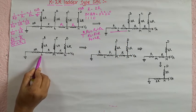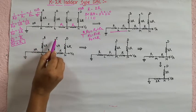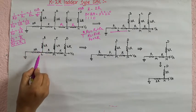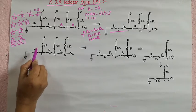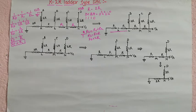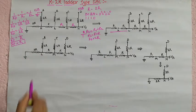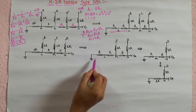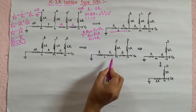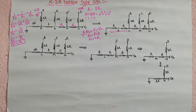Therefore the resistance between node L and ground is equal to 2R. In the third diagram, with node L and ground having resistance 2R, the inputs B, C, D are connected. The resistor between B and L is 2R, and L to ground is 2R. Again these two 2R resistors come in parallel, so the network reduces to a resistor R between L and ground.